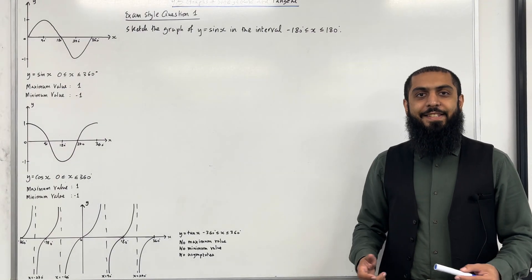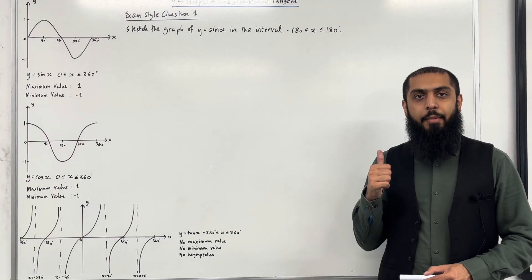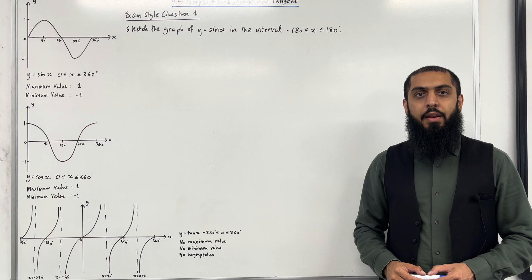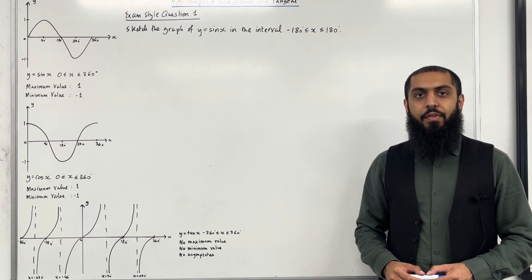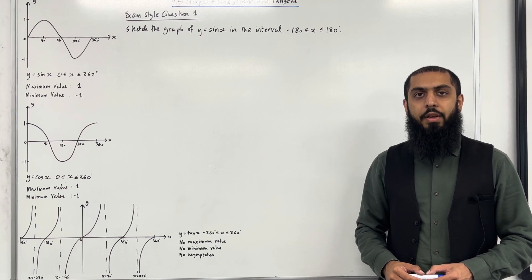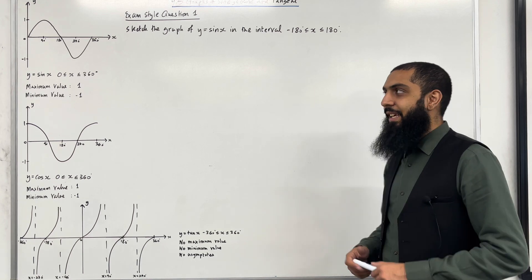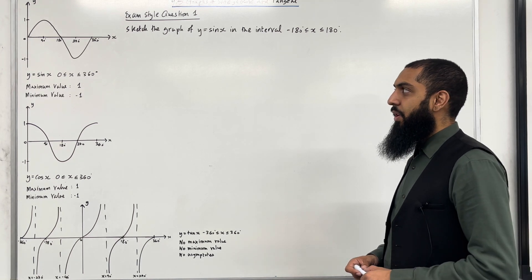Welcome back. In this teaching video I'll be looking at 9.5 graphs of sine, cosine and tangent. 9.5 represents chapter 9, section 5 of the Pearson A-Level Maths Pure Maths C1 textbook. Let's have a look at the key facts of this section.